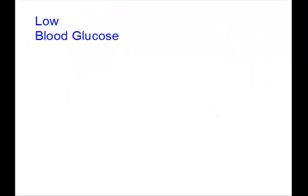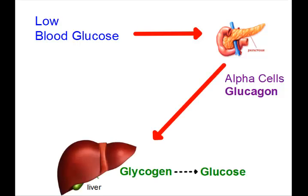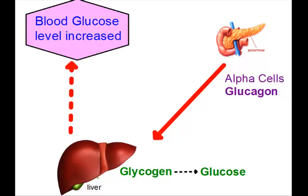On the other hand, let's now have a look at low blood glucose levels — so if there's not much glucose in the blood. That causes some cells in the pancreas called alpha cells to release a hormone called glucagon. And this causes glycogen to be broken down into glucose, so making more glucose available. And if there's more glucose available, we have the blood glucose levels increase.